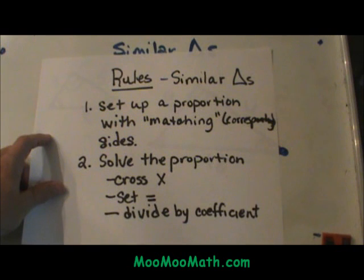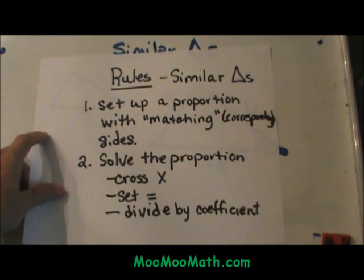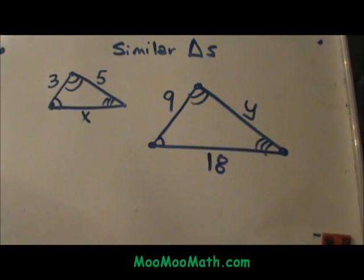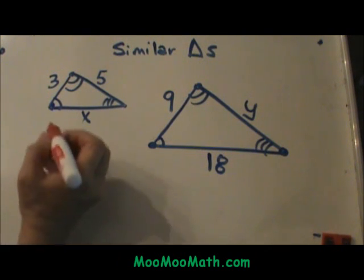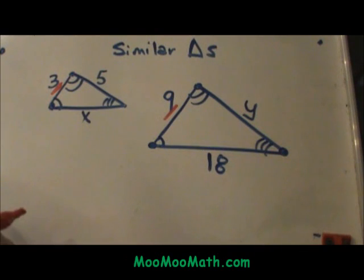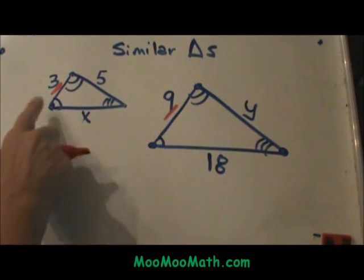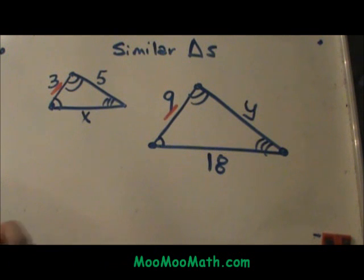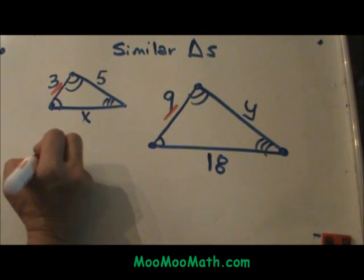So basically we're just going to set up a proportion of corresponding sides. Let's walk through these two examples. This side 3 and this side 9 are corresponding sides because they fall between the same corresponding angles. So I'm going to set those two sides up as a proportion: 3 over 9.